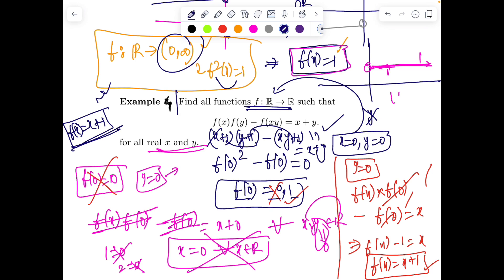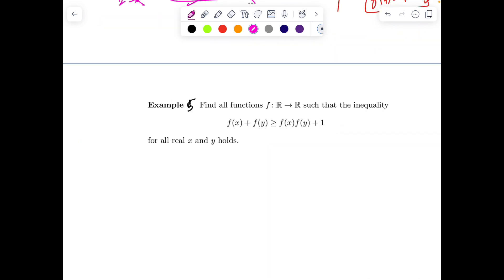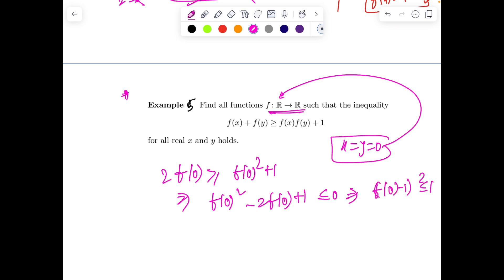Now let's try an inequality functional equation. f(x) + f(y) ≥ f(x)f(y) + 1 for all real x and y. Put x = 0, y = 0, then 2f(0) ≥ f(0)² + 1, which gives f(0)² - 2f(0) + 1 ≤ 0, so (f(0) - 1)² ≤ 0. Since the function is real to real, something squared can't be less than 0. So f(0) = 1.